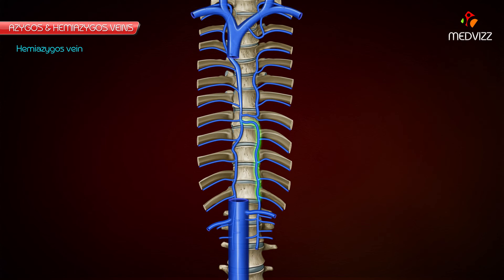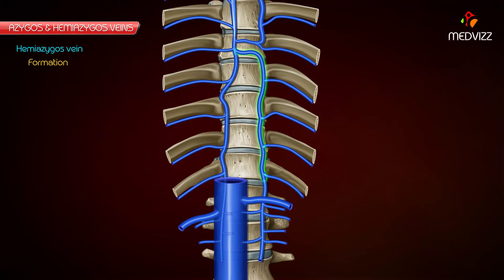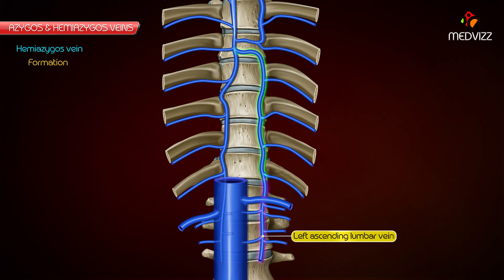Hemiazygous Vein. The hemiazygous vein lies only on the left side and corresponds to the lower part of the azygous vein. Formation: The hemiazygous vein is formed on the left by the union of the left ascending lumbar vein and left subcostal vein.